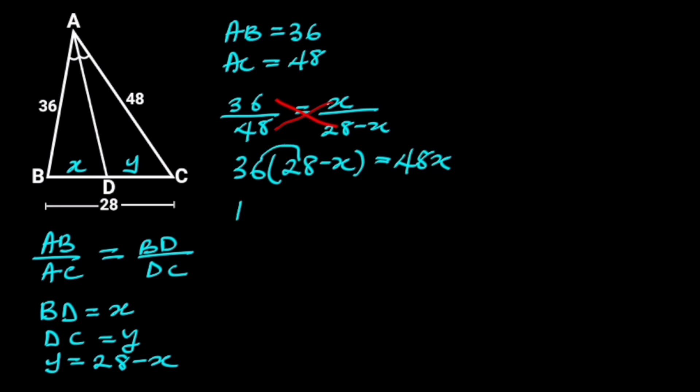36 times 28 is 1008. 36 times minus X is minus 36X. So, we have 1008 minus 36X is equal to 48X.